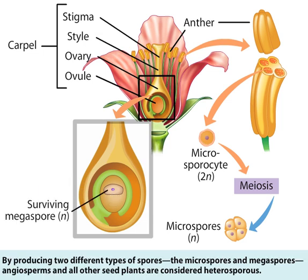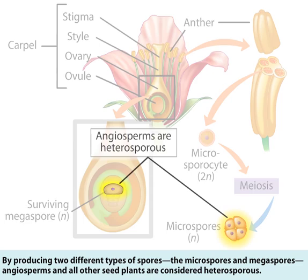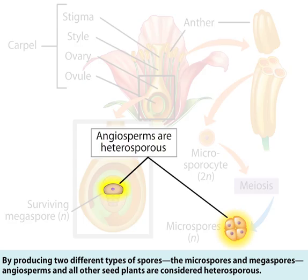By producing two different types of spores — the microspores and megaspores — angiosperms and all other seed plants are considered heterosporous.